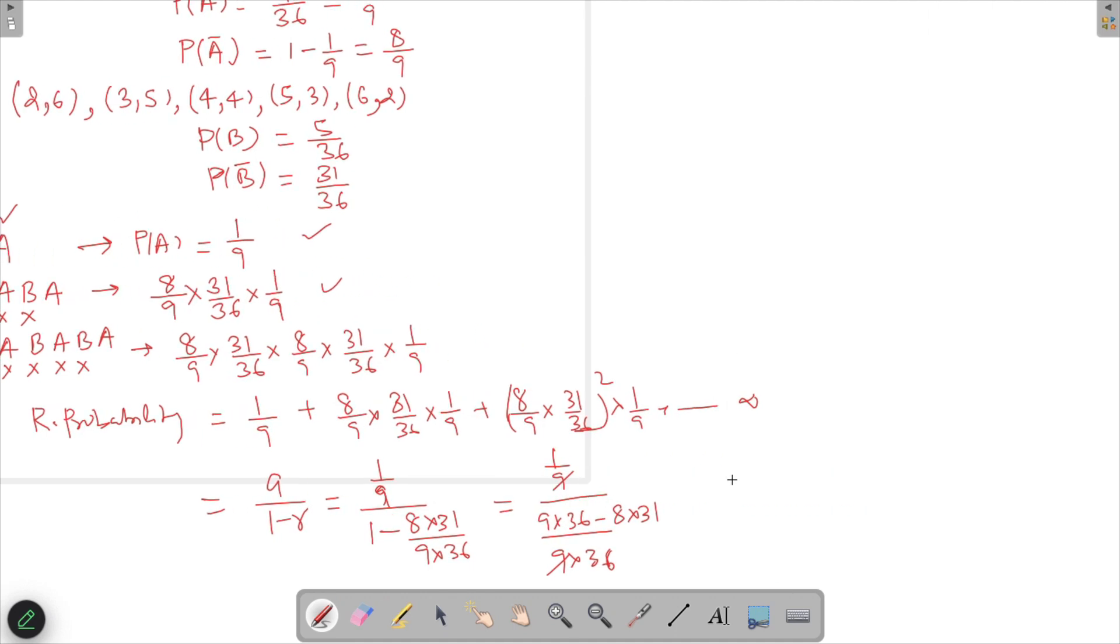I can cancel 9 and 36 goes to the top. Taking 4 common, this becomes 9×9 and 2×31. Once we solve this, 81 - 62 = 19, so we get 9/19.